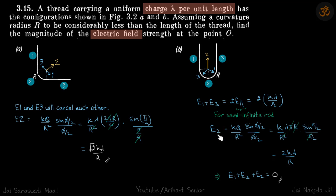Now E2 due to the semi-circular wire — using the arc formula with φ equal to π — if you simplify you will get 2kλ/r again. But this time the direction is upwards. So the magnitudes are the same but directions are opposite, and it will add up to be 0.